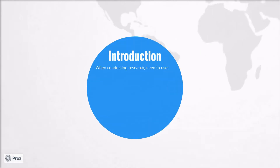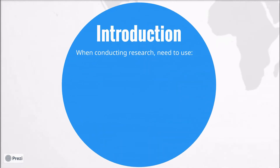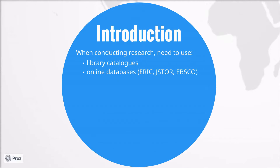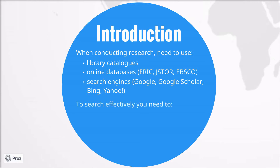When conducting research, you'll need to use various resources to find information. For example, library catalogues, online databases such as ERIC, JSTOR or EBSCO if your school or university subscribes to these. And, especially before you start university, you may need to use search engines such as Google, Google Scholar, Bing and Yahoo. In order to use any of these tools effectively, you need to do three things, and that's what we will look at in this video.